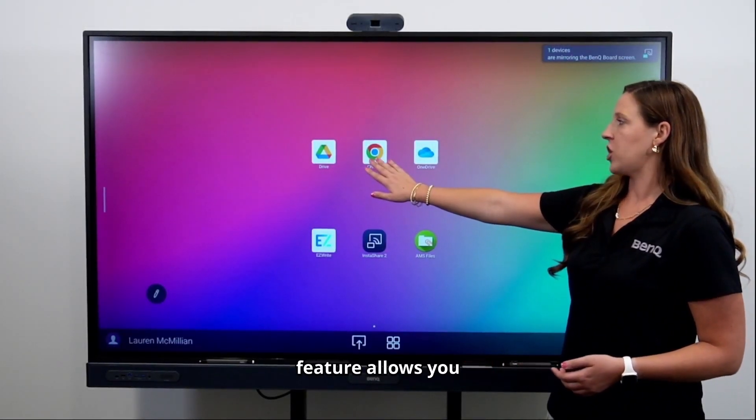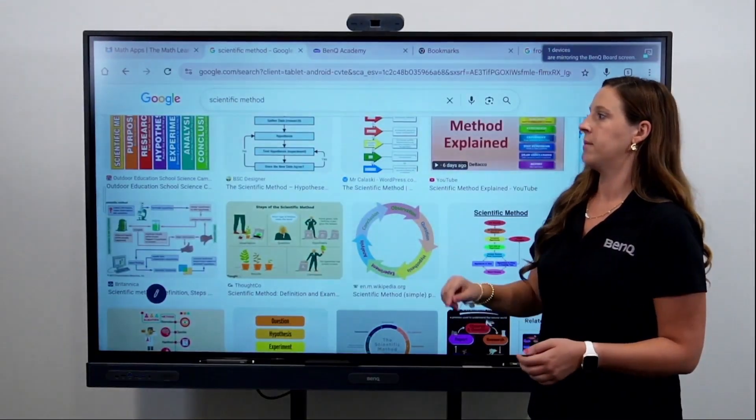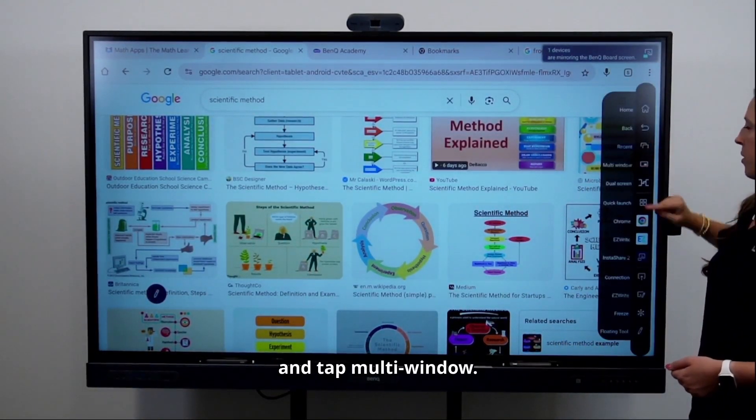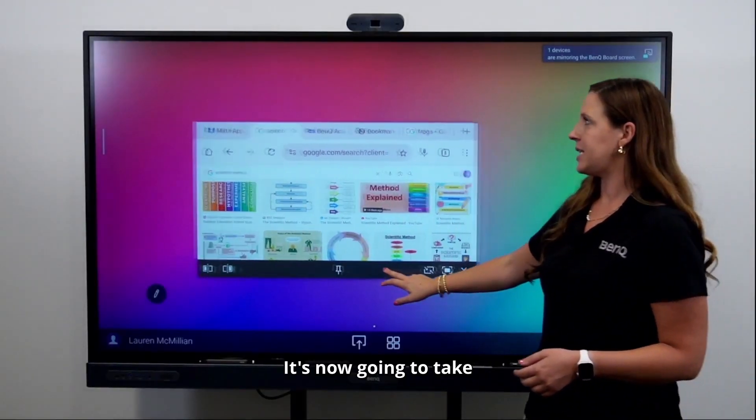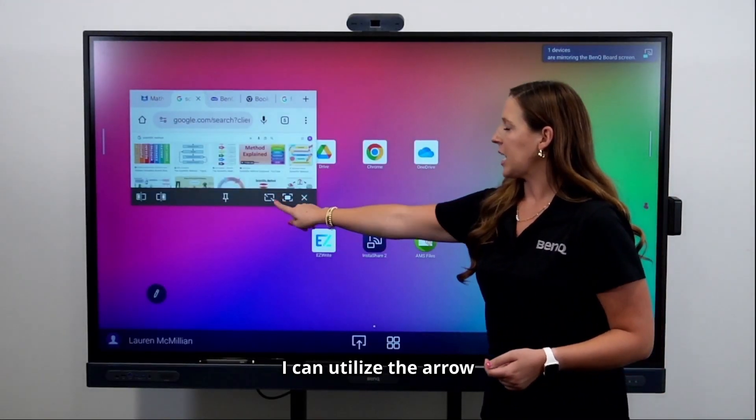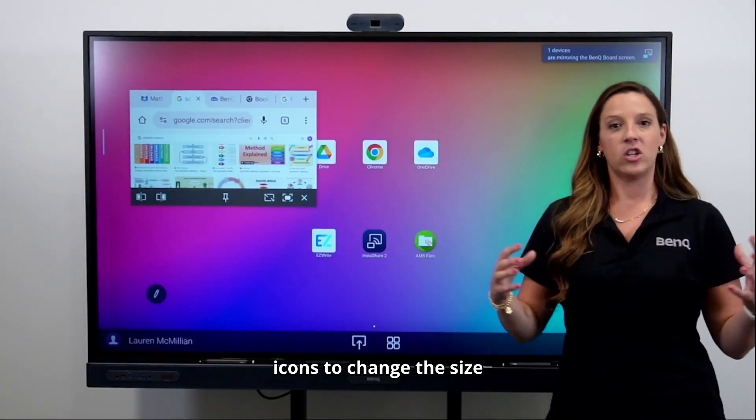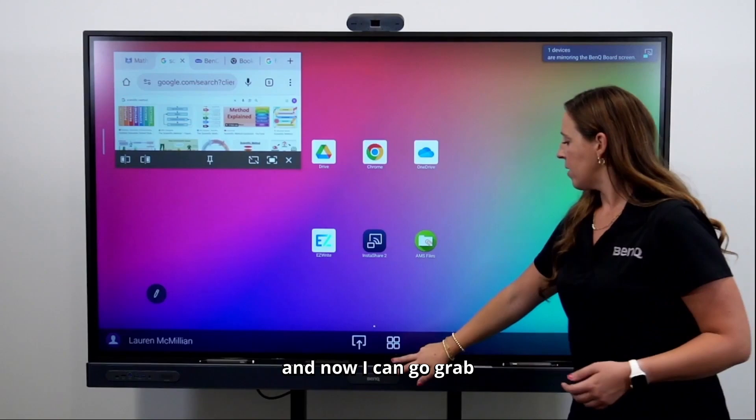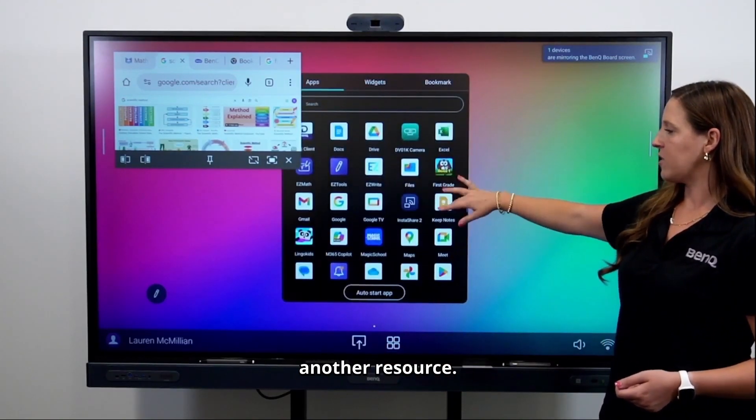The multi-window feature allows you to open an app, tap the sidebar, and tap multi-window. It's now going to take that resource that I'm in and put it in a smaller window. I can utilize the arrow icons to change the size to make it bigger or smaller. I can move this out of the way and now I can go grab another resource.